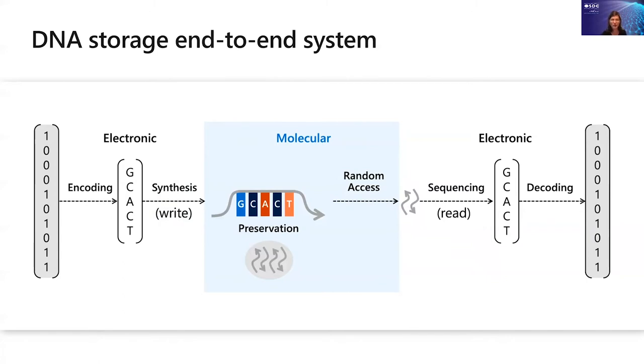We start with bits. As I mentioned, we can encode into sequences of those bases. That's still an electronic representation. Then it's time to make the molecules. That's the process of synthesis, which is our write process. Next we preserve the DNA to ensure that we create the conditions for the information to be preserved into the DNA. When it's time to read, we'll perform random access and recover the molecules that we're interested in reading. We'll sequence them, which is the process of reading them, and we'll decode them and then recover the bits that we had originally stored.